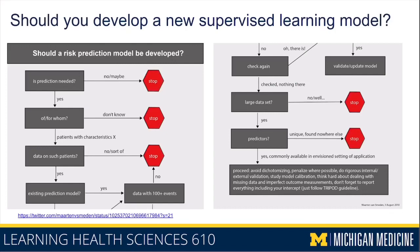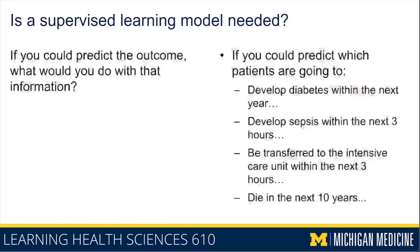That's the overall workflow for deciding whether and when to develop a new model. The first question was: is a prediction even needed? The key issue here has to do with impact. If you could predict the outcome, what would you do with that information? For example, if you could predict which patients are going to develop diabetes within the next year, are there interventions you could deliver to lower their risk? Maybe those are patients you bring into clinic sooner, monitor more intensely, or reach out to in order to titrate their medications more carefully.